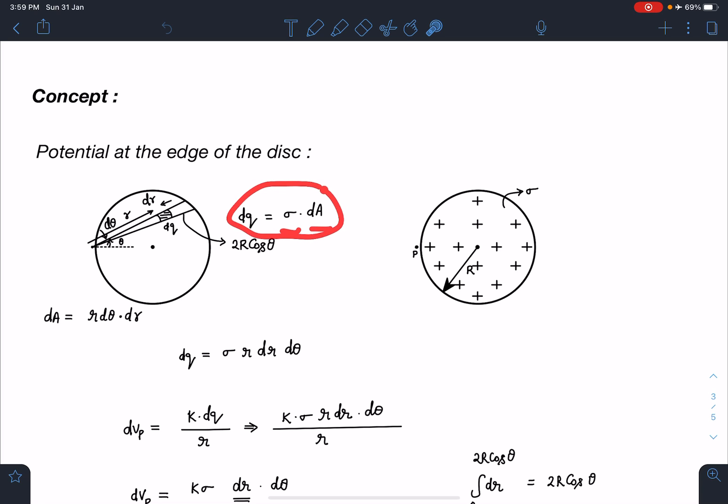dq equals sigma dA—this is the charge on it. Due to this charge, we can write the potential using k*q/r formula. The area of this element, if you see carefully, this length is going to be r*d(theta) and this length is dr.